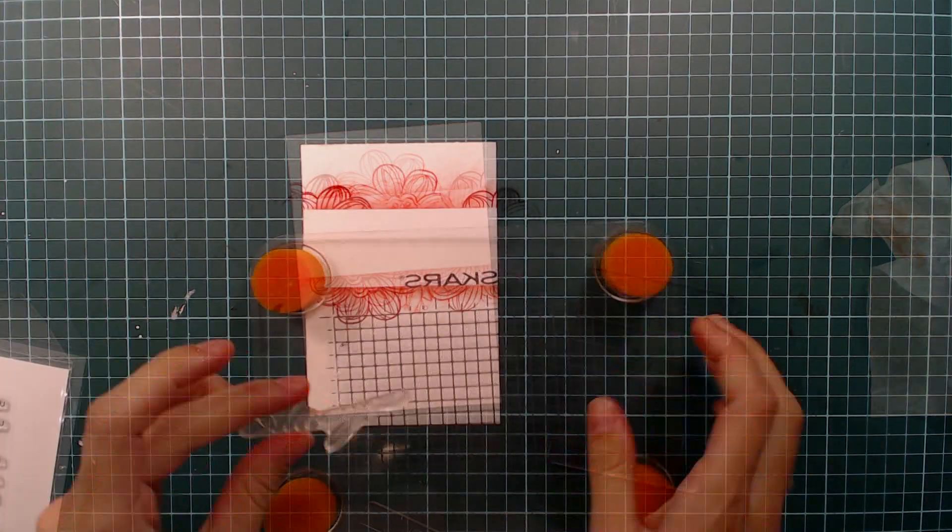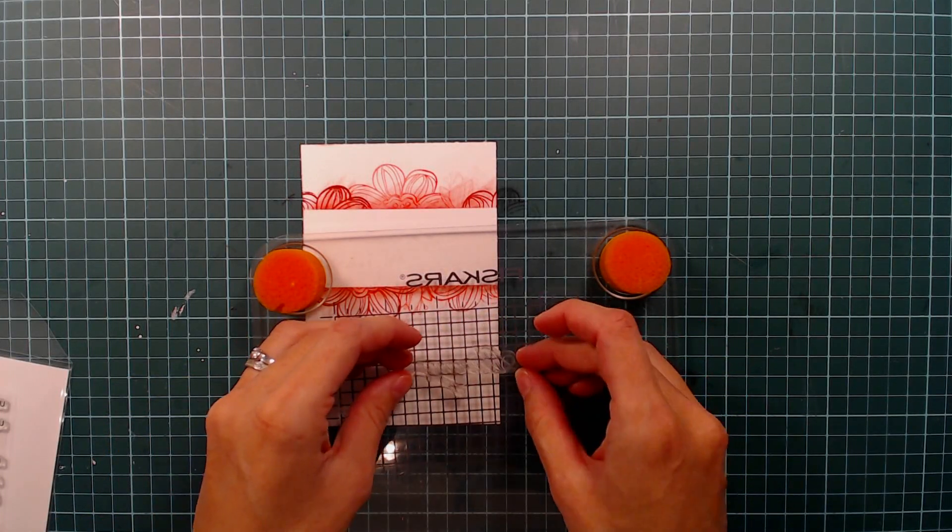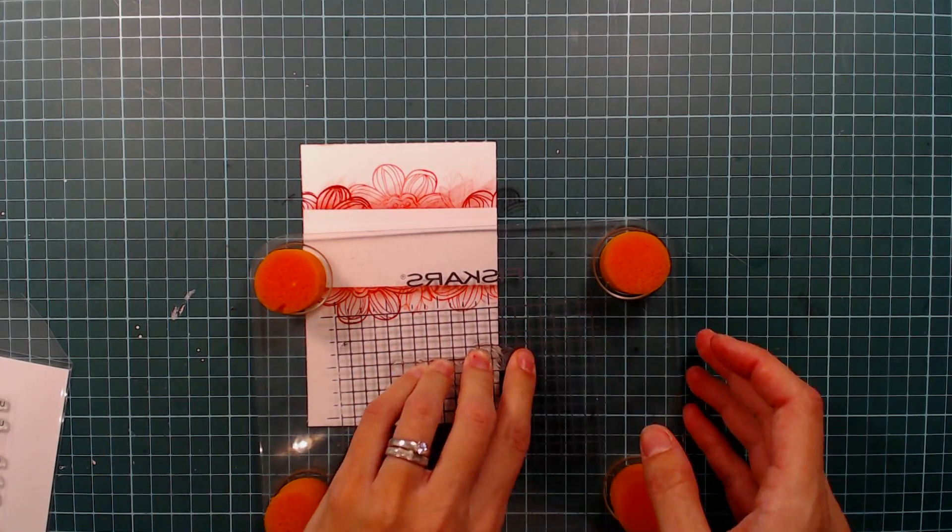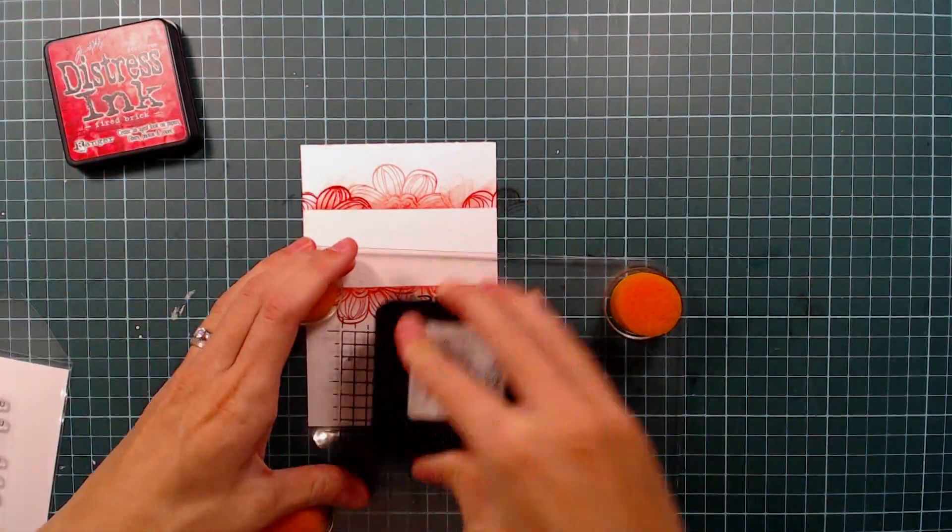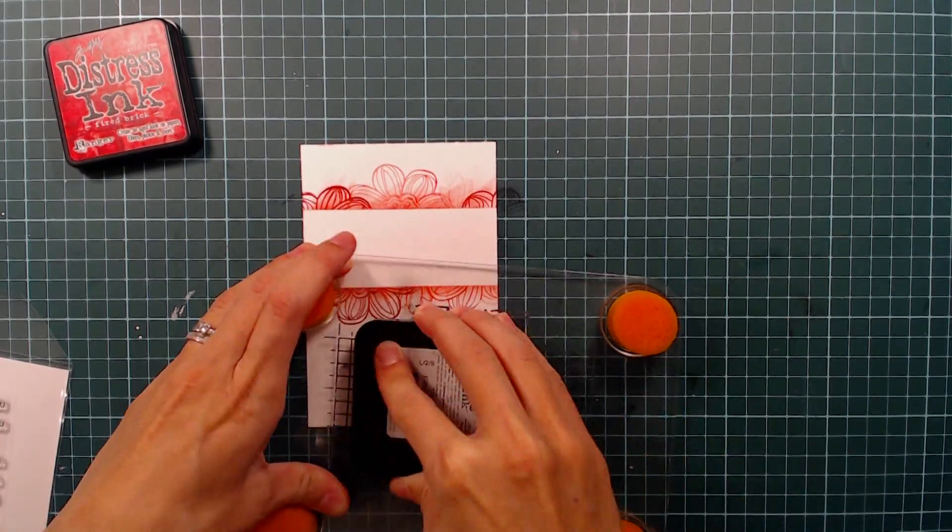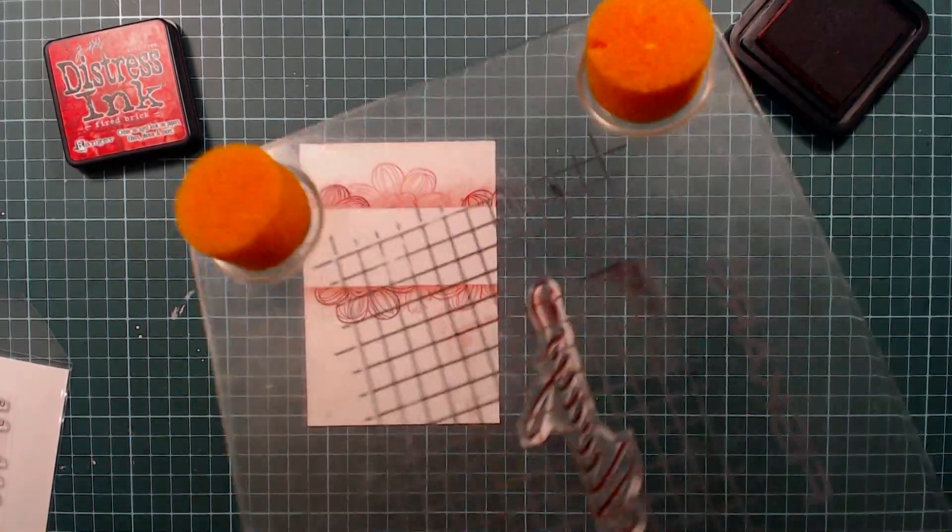That was the finished piece. Here I'm going to do some stamping. I'm going to stamp part of my sentiment. I'm using the word always and stamping it in Fired Brick Distress Ink. I'm trying to get it centered on the card to make sure that I can fit the rest of the sentiment in later.